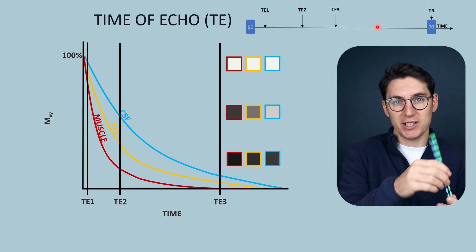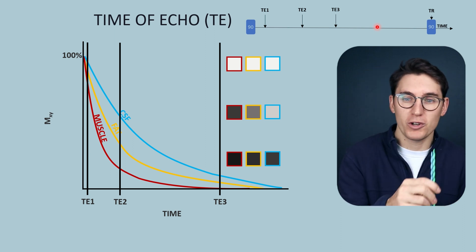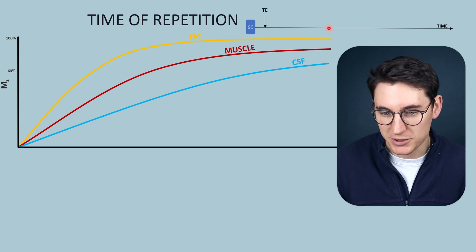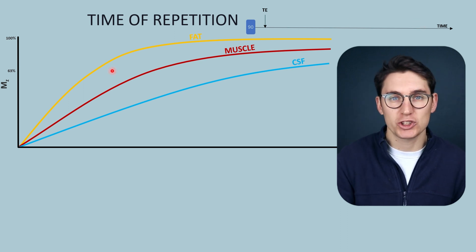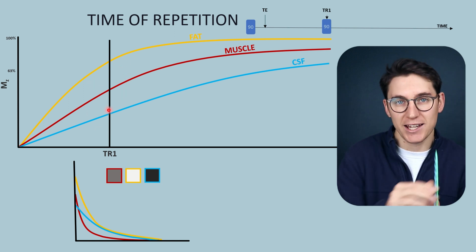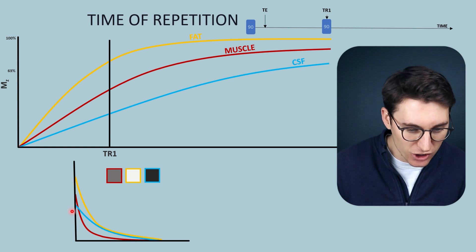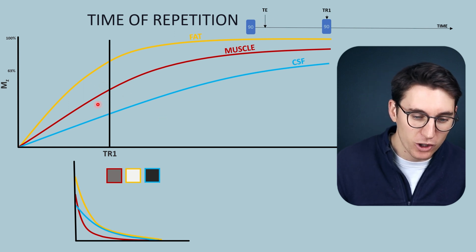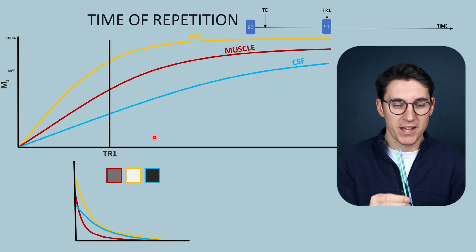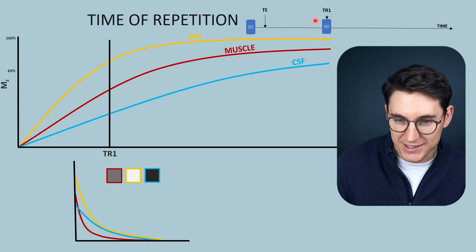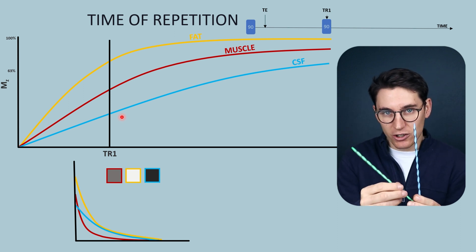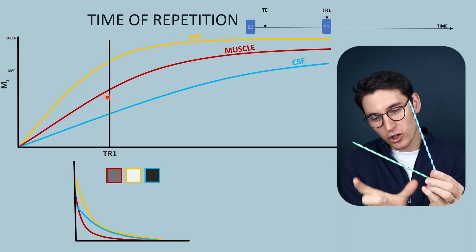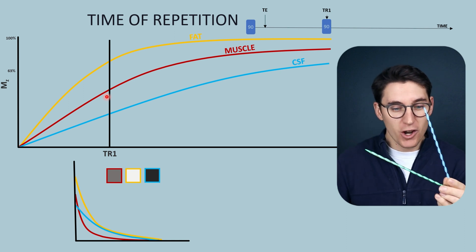When looking at the time of repetition — the time we allow spins to regain longitudinal magnetization before flipping again — changing the TR highlights T1 differences within tissues. With a short TR, tissues haven't fully regained their longitudinal magnetization. Fat regains longitudinal magnetization much faster than water or CSF does. So at a short TR, fat has regained much more longitudinal magnetization in the z-axis than water has.